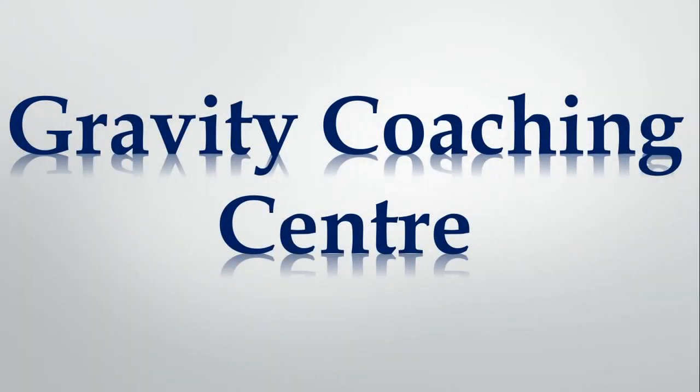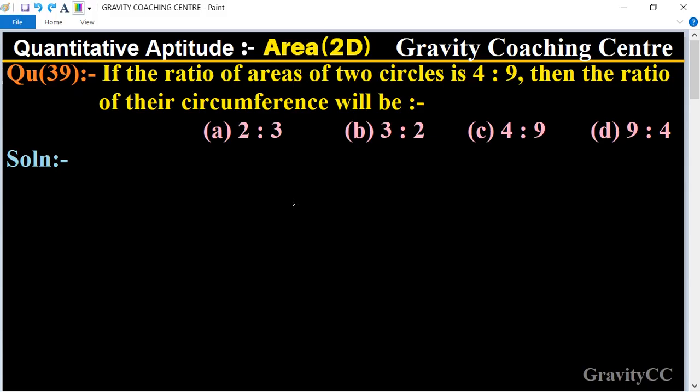Welcome to our channel, Gravity Coaching Center. Quantitative Aptitude, chapter Area, question number 39. If the ratio of areas of two circles is 4:9, then the ratio of their circumference will be? In this question, areas of two circles is given as 4:9. So what is the ratio of their circumference? We use a theorem to solve this question.